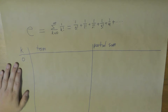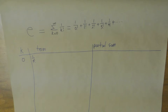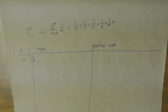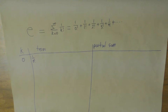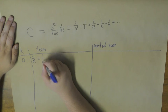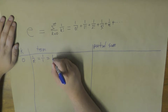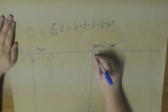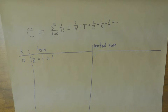For k equals 0, we need 1 over 0 factorial. You might be wondering what is 0 factorial — first of all, what is a factorial? The colloquial definition is you take the number you're factorialing and multiply it with every successive smaller integer until you get to 1. So 2 factorial is 2 times 1, 5 factorial is 5 times 4 times 3 times 2 times 1, and so on. Of course, that doesn't tell you what 0 factorial is. Well, it turns out 0 factorial is just defined as 1. So that's 1 over 1, which gives us 1. And our partial sum is 1, because we only have one term.